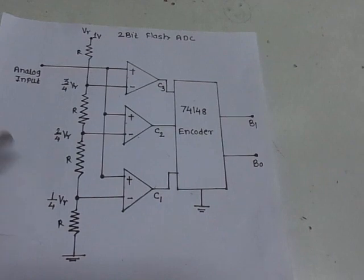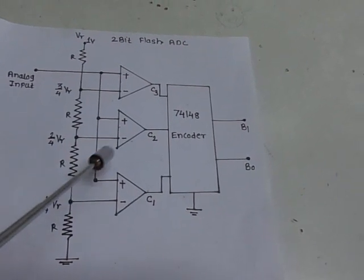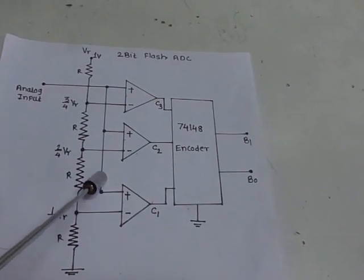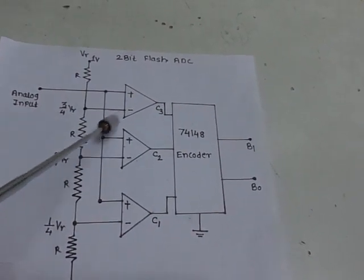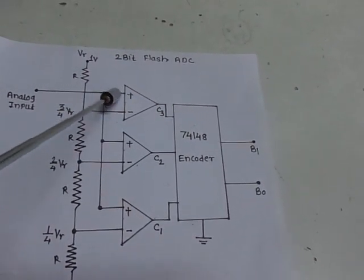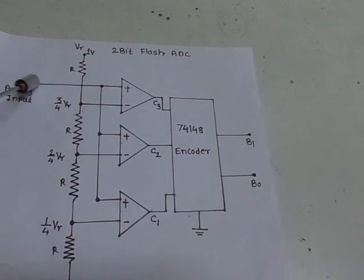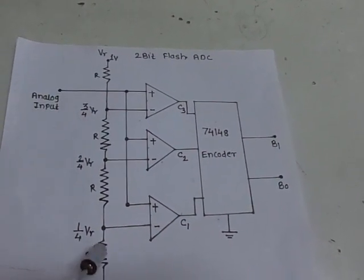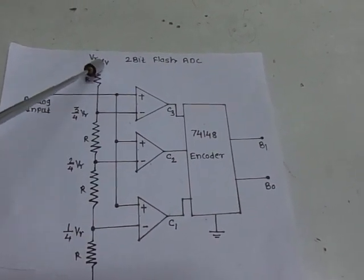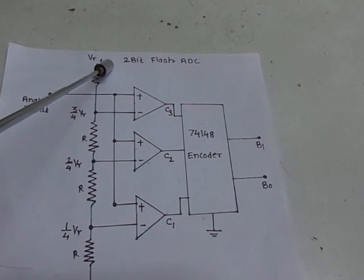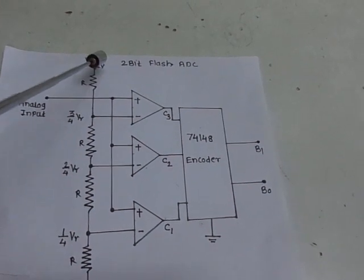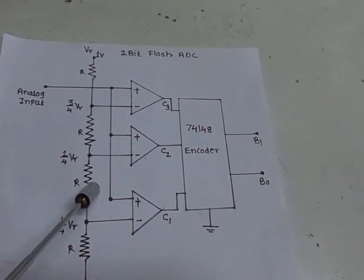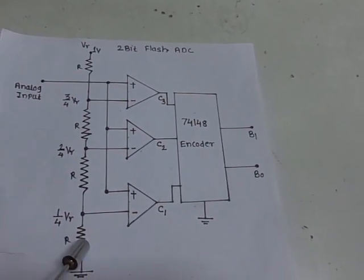If you consider the circuit diagram we have here, all the positive terminals of the op-amps are connected together, and to this we are going to apply the analog input signal. The reference voltage we are going to apply is 1 volt, and correspondingly the resistive elements are connected in the circuit.